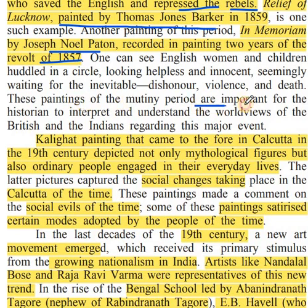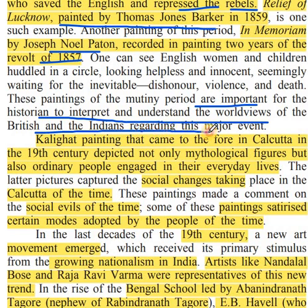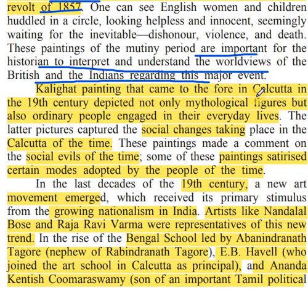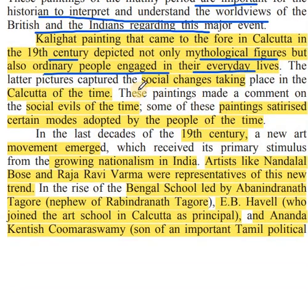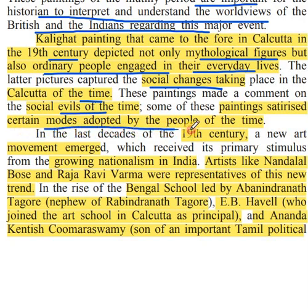These paintings of the Mutiny period are important for the historian to interpret and understand the world views of the British and the Indians regarding major events like the 1857 revolt. The Kalighat paintings that came to flourish in Kolkata in the 19th century depicted not only mythological figures but also ordinary people engaging in their everyday lives. The later pictures captured the social changes taking place in Kolkata at the time, and some of these paintings satirized certain modes of behavior adopted by the people of that time.